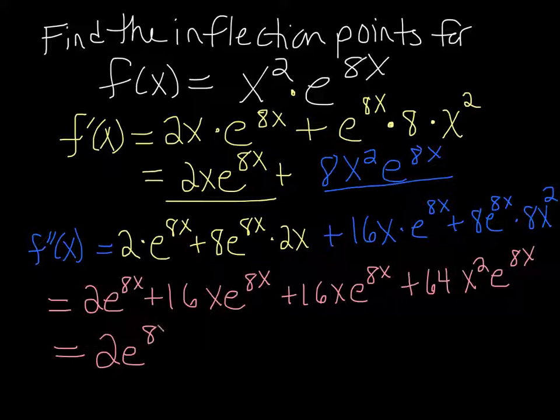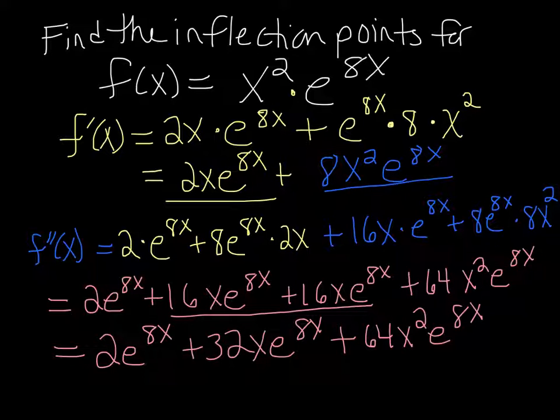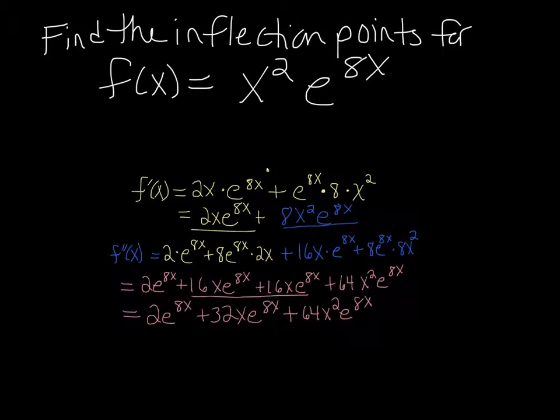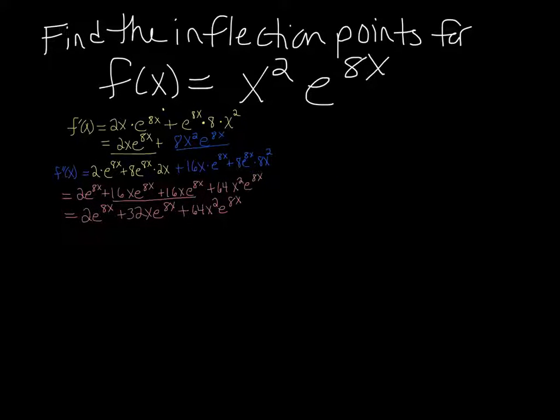Combining like terms, you get 2e to the 8x, plus 32xe to the 8x, because these two combine. Then plus 64x squared e to the 8x. All right, so we have our second derivative, and it's all cleaned up. Now what we need to do is take that second derivative and set it equal to 0 and solve.